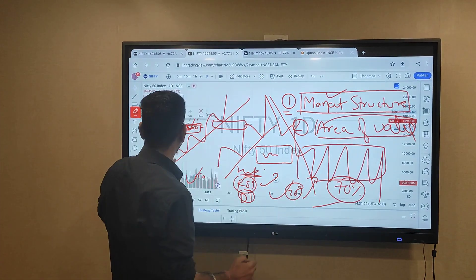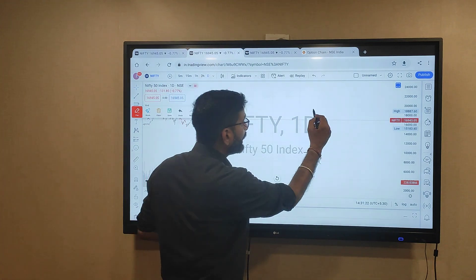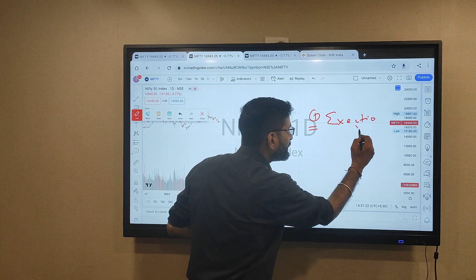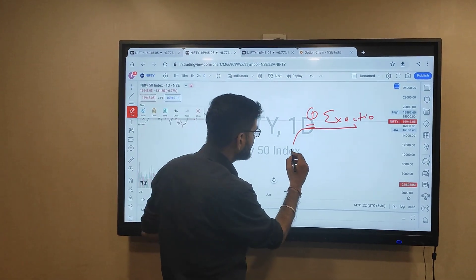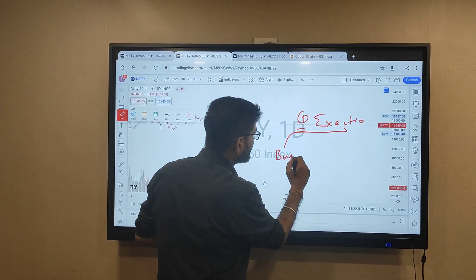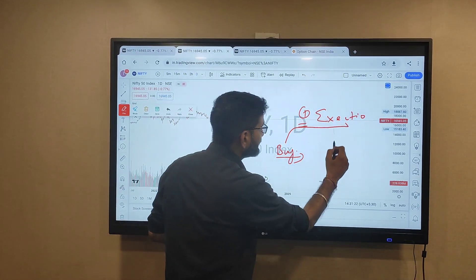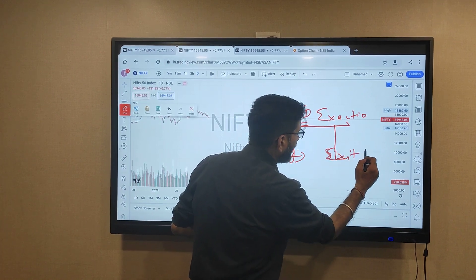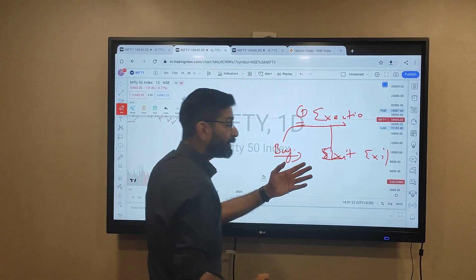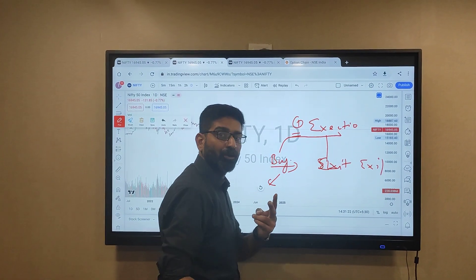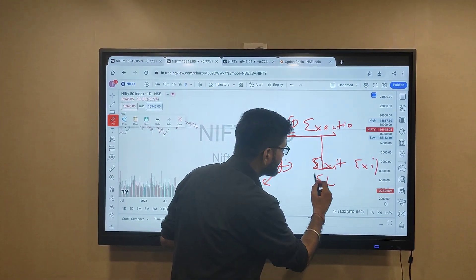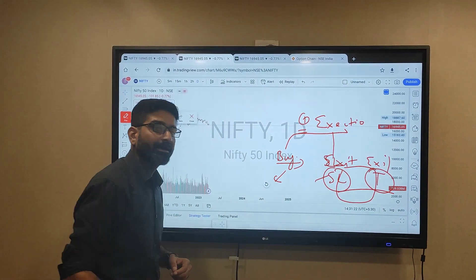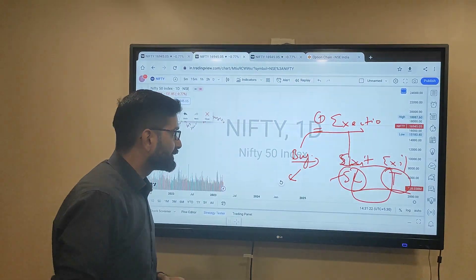So you have to identify structure. Area of value is the place where you have to buy. And the third thing you have to go for - execution. In execution, there are only three parts. The most easy thing is area of value. Next, you have two exits. Exit means after buy, why two exits? After buying, you have only two options - one is your stop loss and the other one is your target. In both the cases, you have to exit the market. That's it.